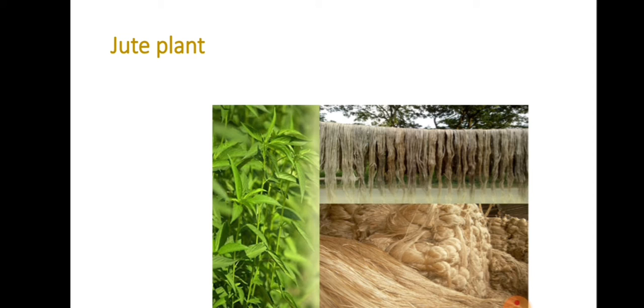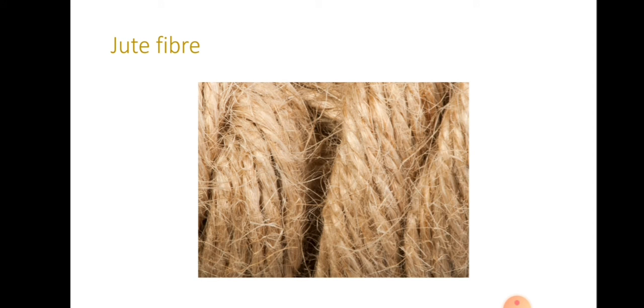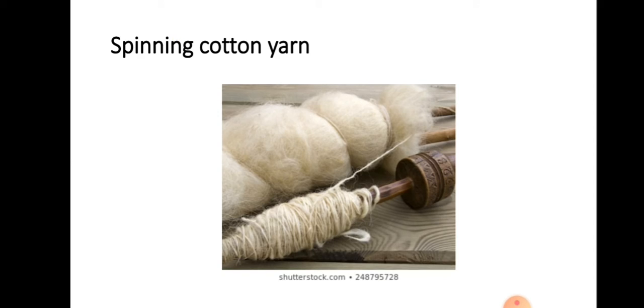To make fabric, all these fibers are first converted into yarns. This is the jute rope made up of jute fiber. Spinning cotton yarn. The process of making yarn from fibers is called spinning. The process of making yarn from fibers is called spinning.